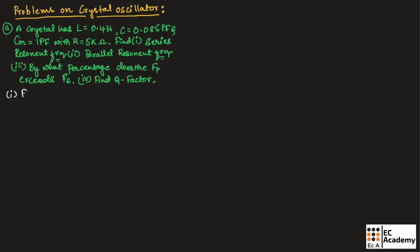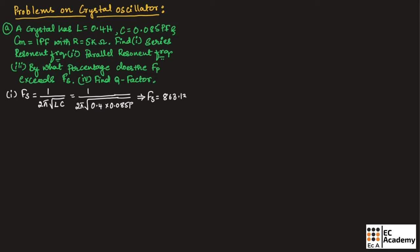First, let us find the series resonant frequency, given as Fs = 1 divided by 2π√(L·C). Substituting L = 0.4 Henry and C = 0.085 picofarad, we get the series resonant frequency equal to 863.138 kilohertz.